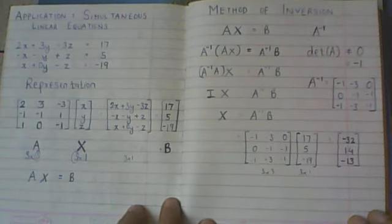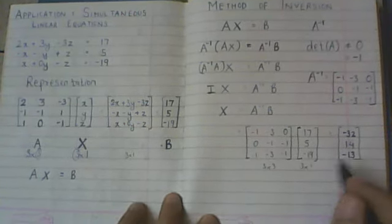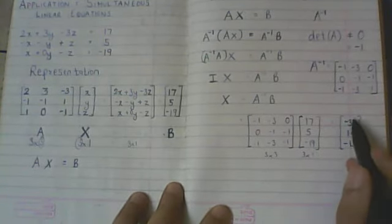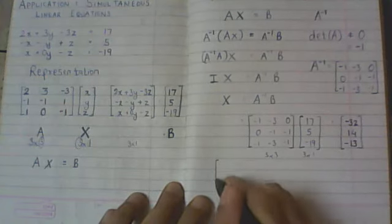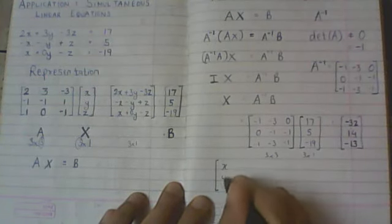So assuming you have got these values, what we can say now is that these values are nothing but your variables x, y, z. So you have actually solved for the variables x, y, z.